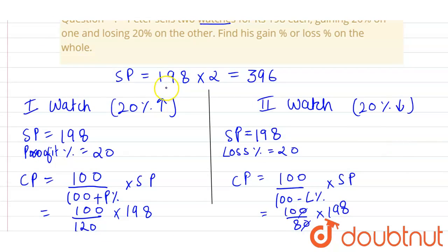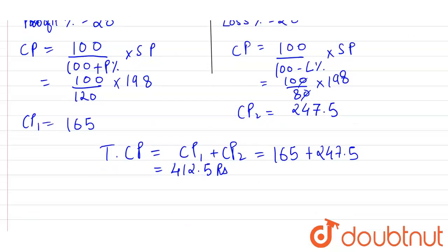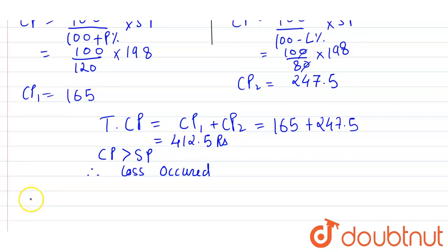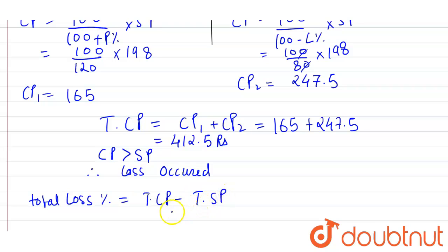Our total selling price is 396 rupees and our total cost price is 412.5 rupees. Since CP is greater than SP, it is clear that we are in loss. Therefore, a loss has occurred.